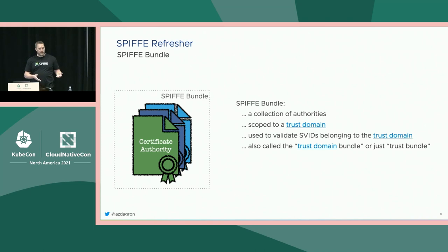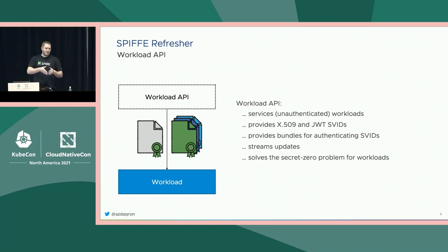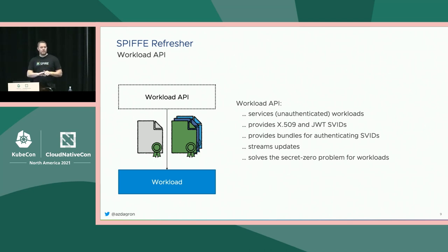How do we get those documents to the workload itself so that it can use them? The answer is something called the Workload API. This is an unauthenticated API — workloads don't have to bring anything to the table to talk to it and obtain credentials. They just find the Workload API, say 'give me my identity,' and the Workload API identifies the workload, applies whatever policy is necessary, and ships down the SVID and the bundles. As those materials change and are rotated — because with SPIFFE you can get rotation all the way from the leaf certificates up through your certificate authorities — those updates are streamed down to the workload, so the workload always has a very current picture of what the identity universe looks like.